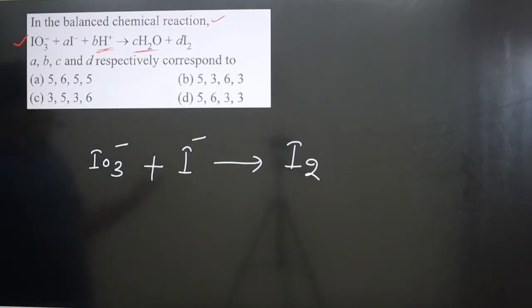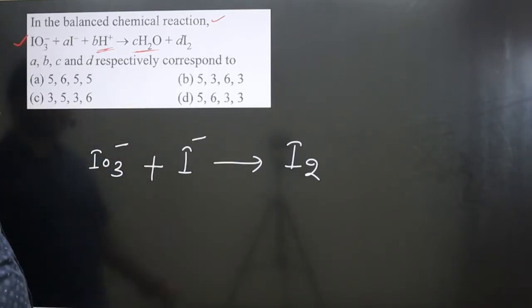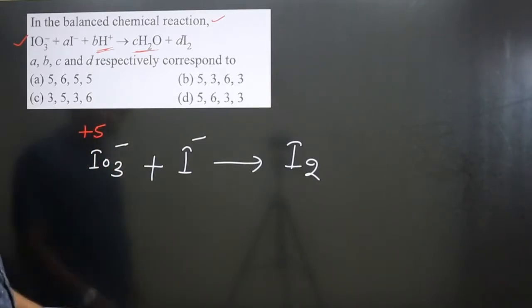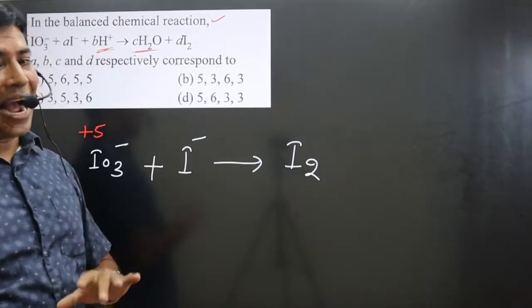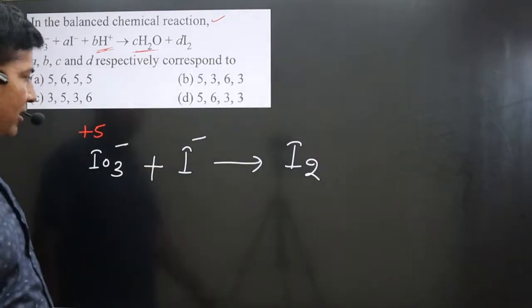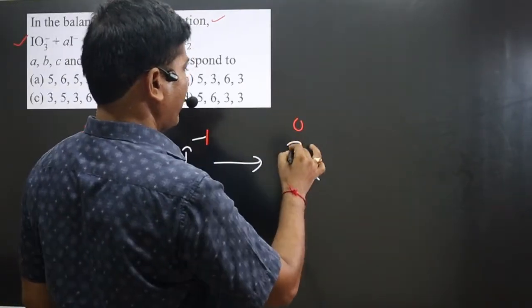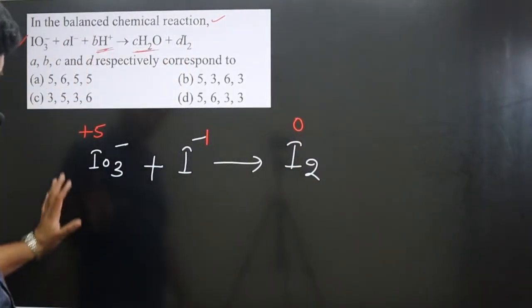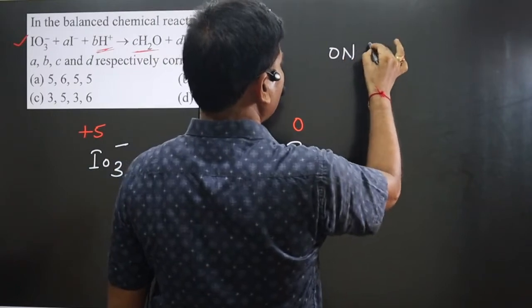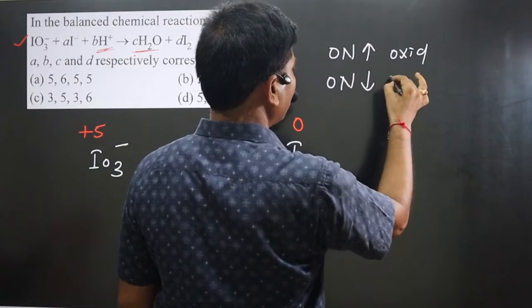Now we write down the oxidation number of elements on both sides. In IO₃⁻, there are 3 oxygens each at −2, giving −6 total, so iodine is in +5 oxidation state. The iodide ion I⁻ is a monoatomic ion — the charge equals its oxidation number, which is −1. I₂ is a neutral molecule made of the same type of atoms, so its oxidation number is 0. In a redox reaction, an increase in oxidation number is oxidation and a decrease is reduction.